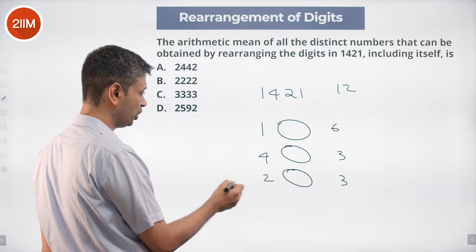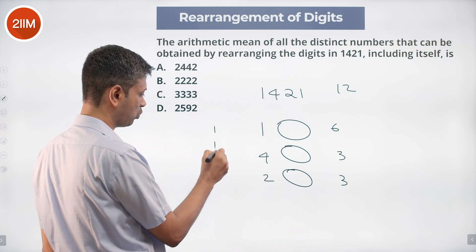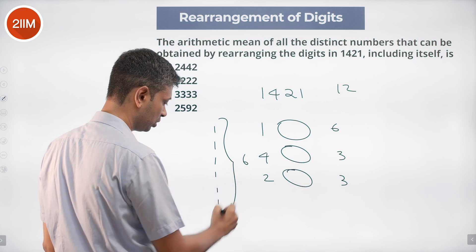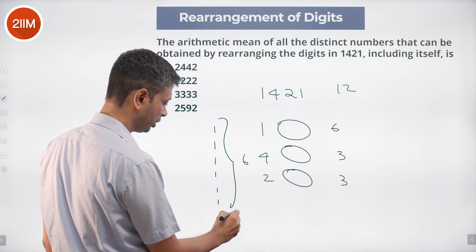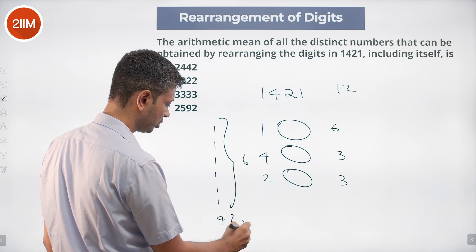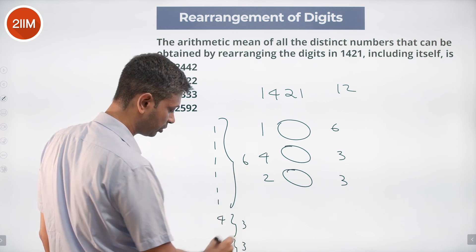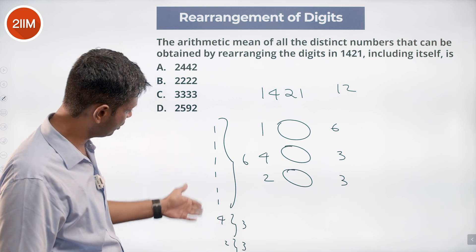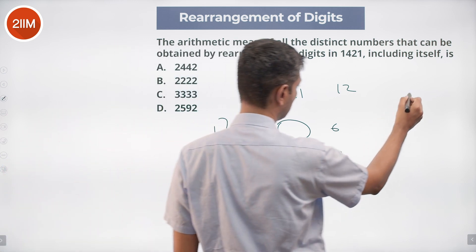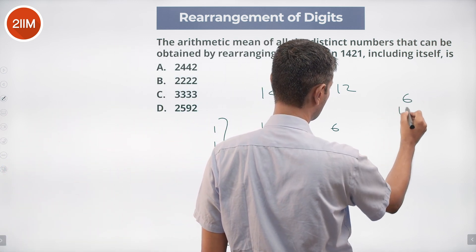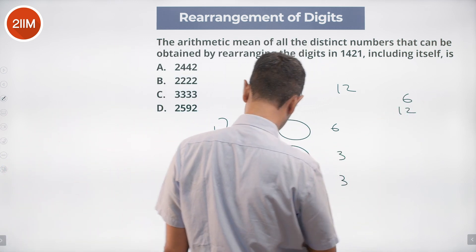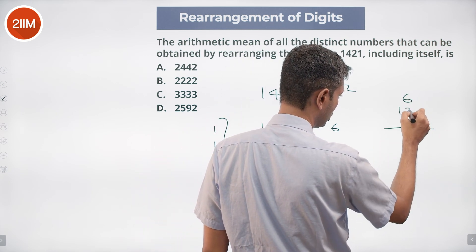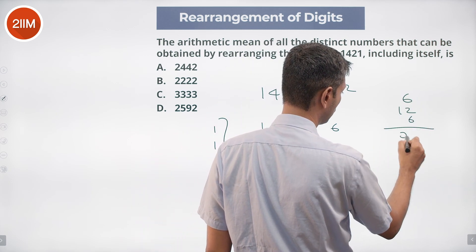If I add up all the unit digits, the same pattern repeats: 1 appearing 6 times, 4 appearing 3 times, 2 appearing 3 times. So the sum of all unit digits is 6×1 + 3×4 + 3×2 = 6 + 12 + 6 = 24.